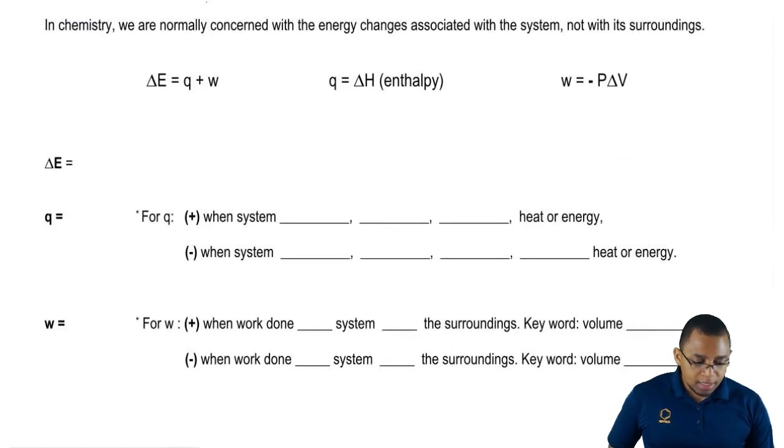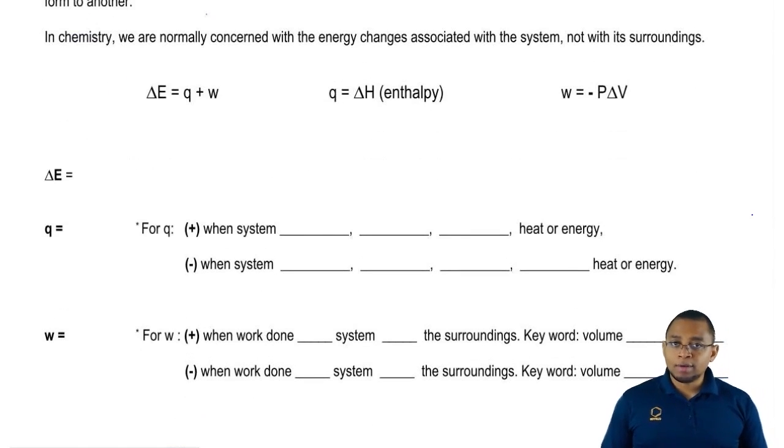We've discussed systems versus surroundings. These are the two types of concepts we're dealing with when it comes to energy changes. The system either gains or loses energy based on the surroundings.